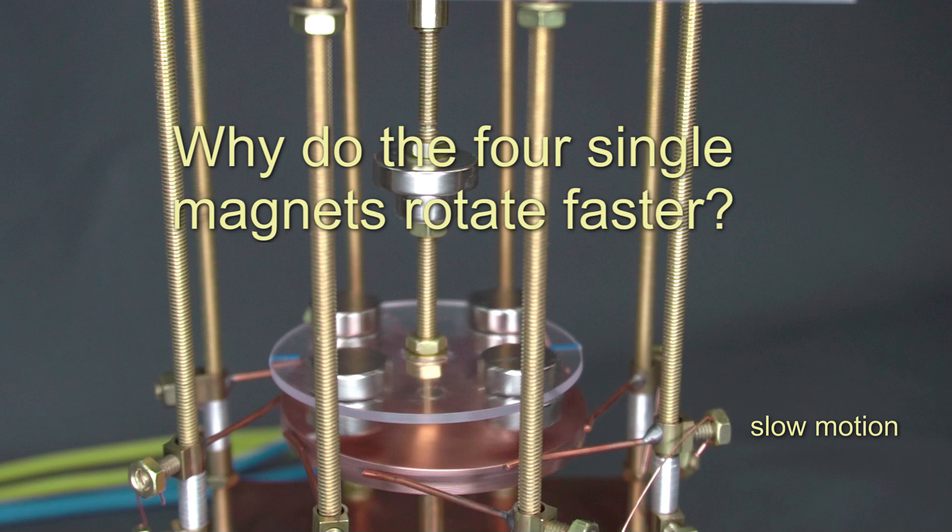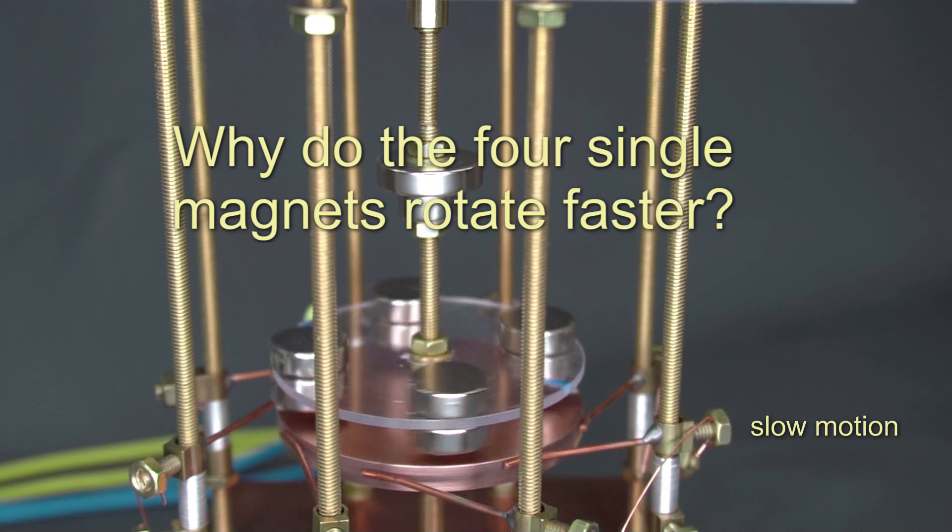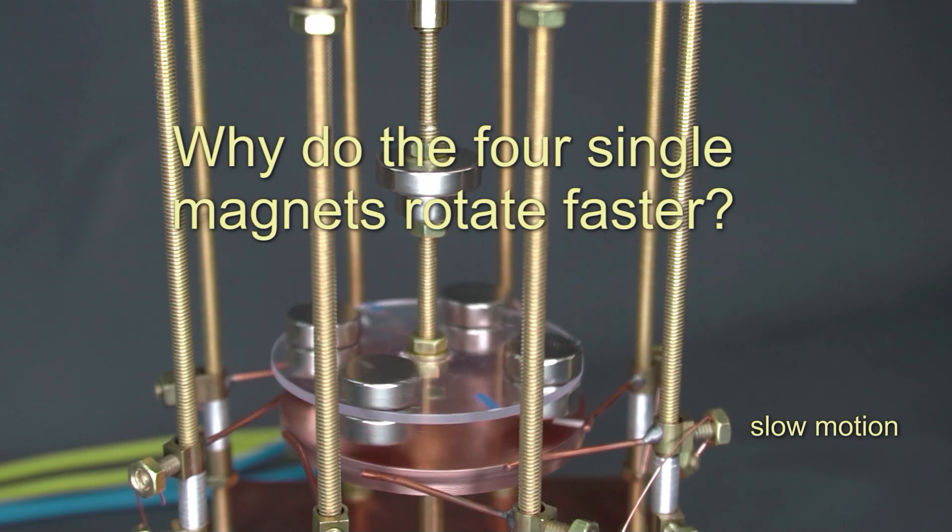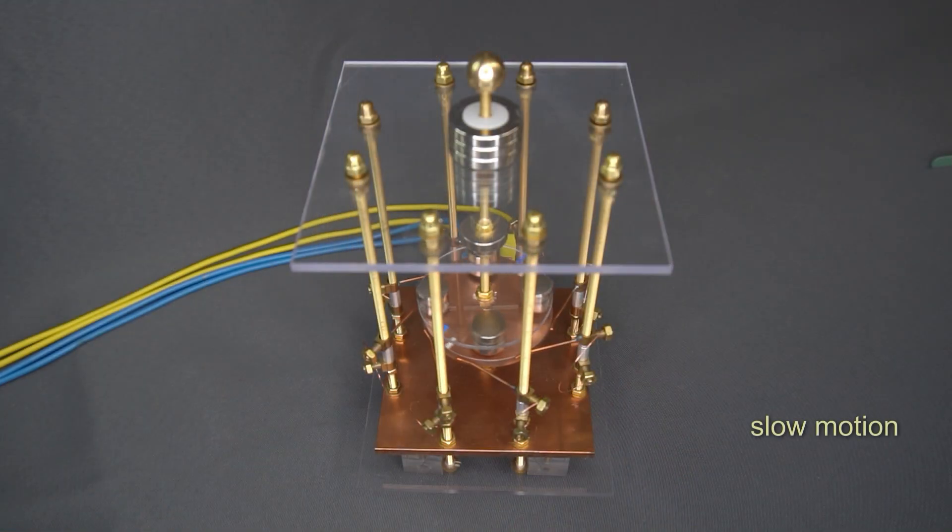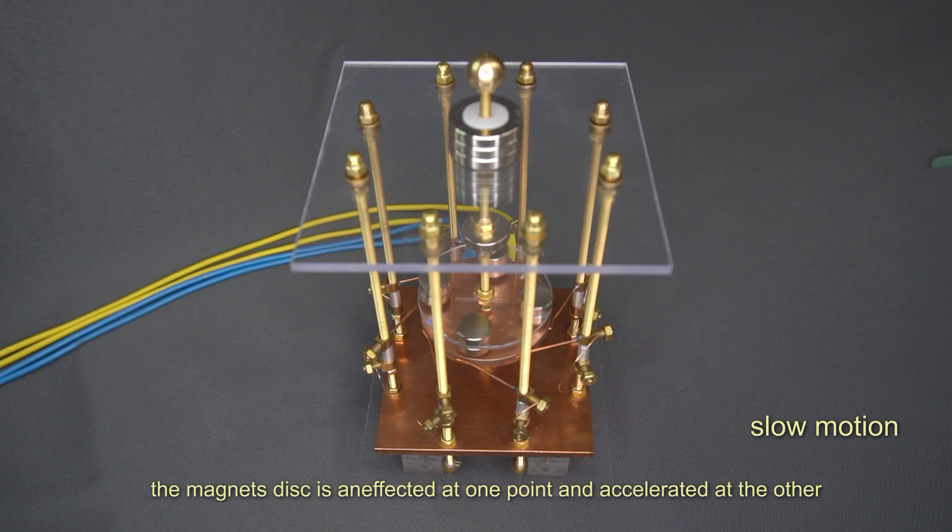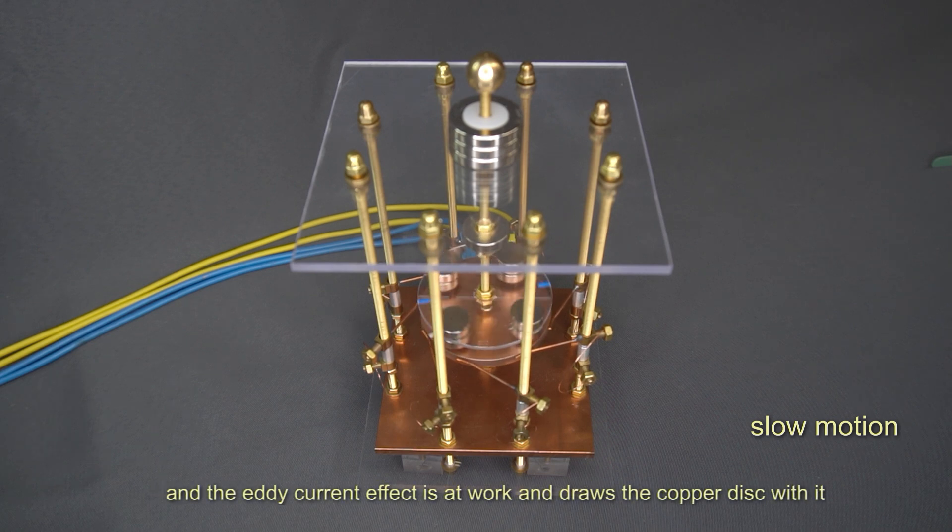Why do the four single magnets rotate faster? The magnet's disc is affected at one point and accelerated at the other. And the eddy current effect is at work and draws the copper disc with it.